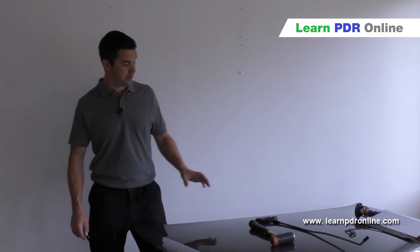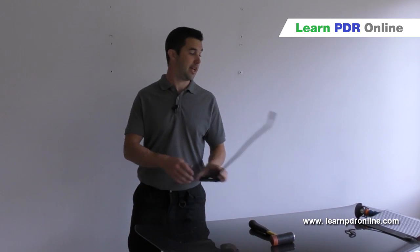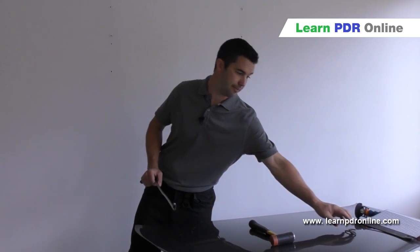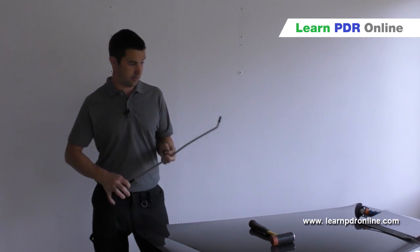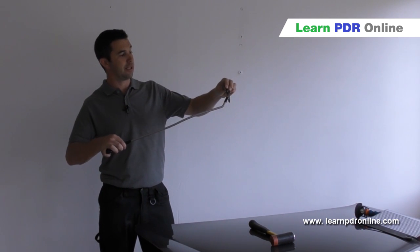Mistake number six is all to do with leverage, particularly with an s-hook and ring setup. So we have our bar and we have it going through the ring.